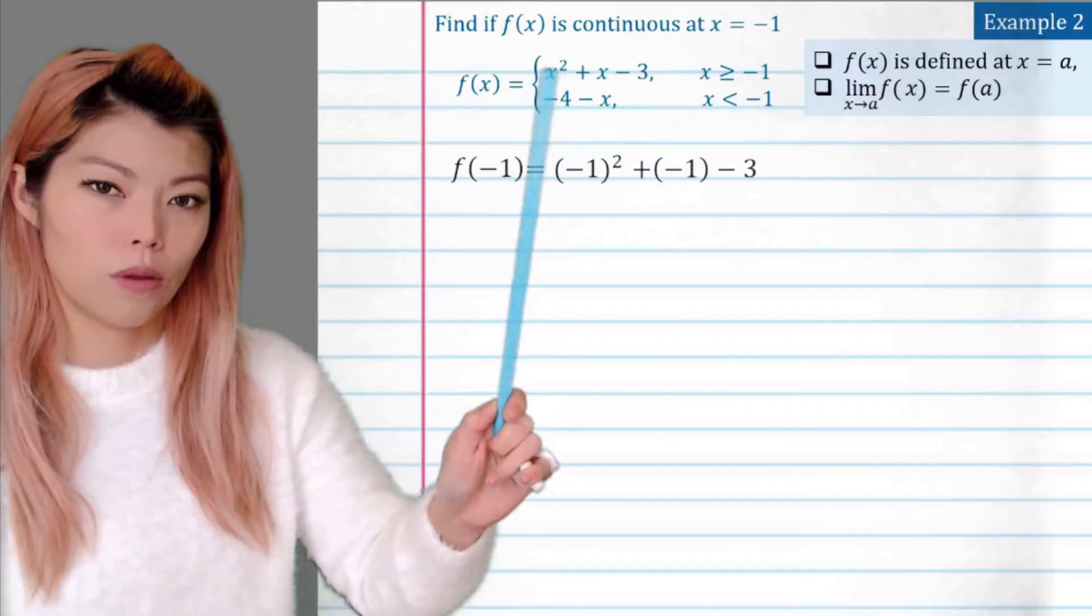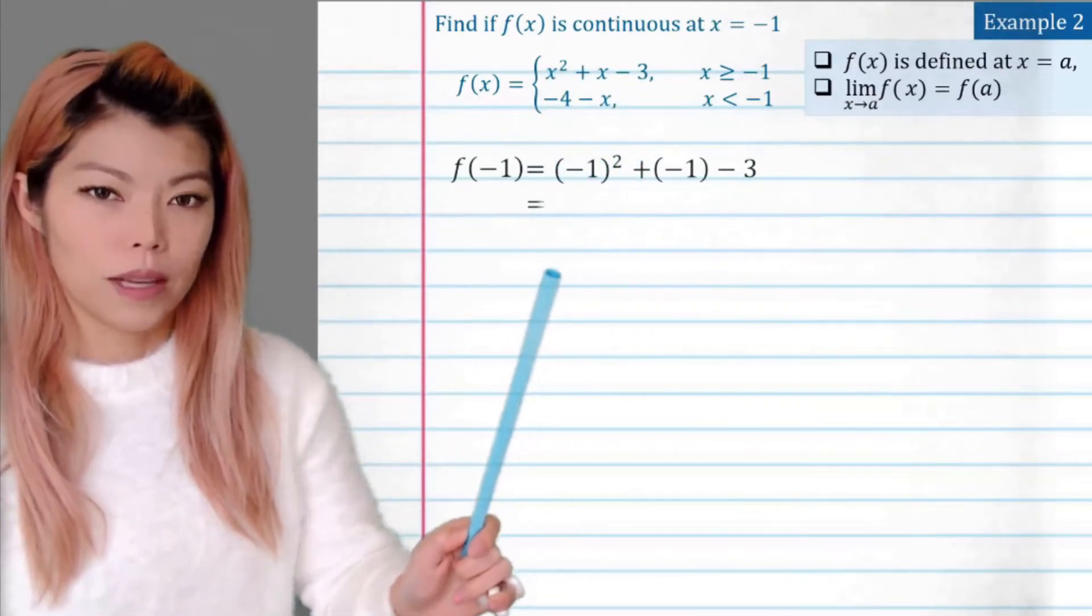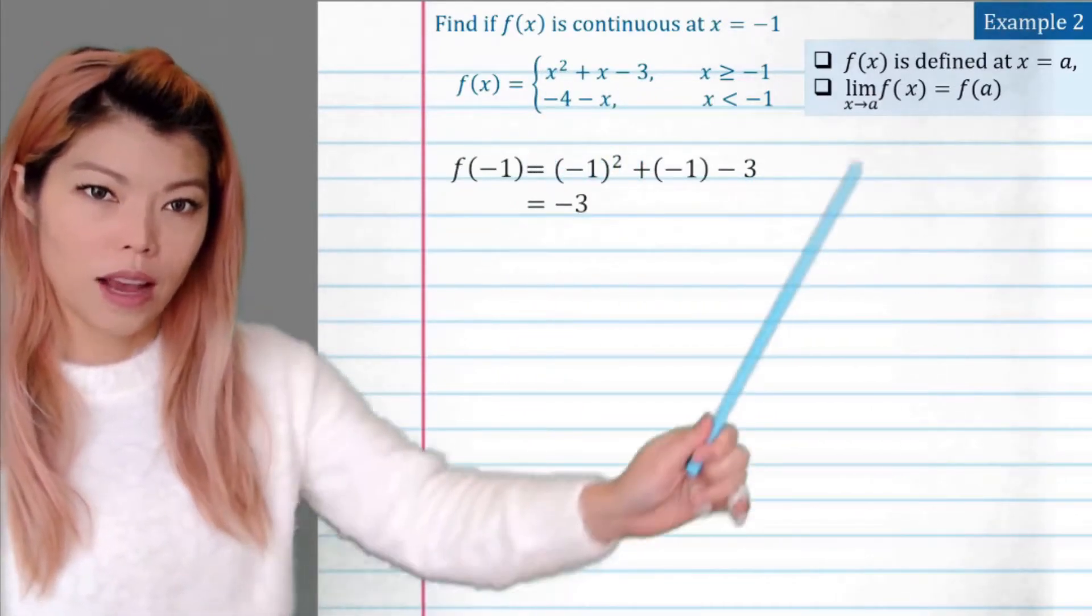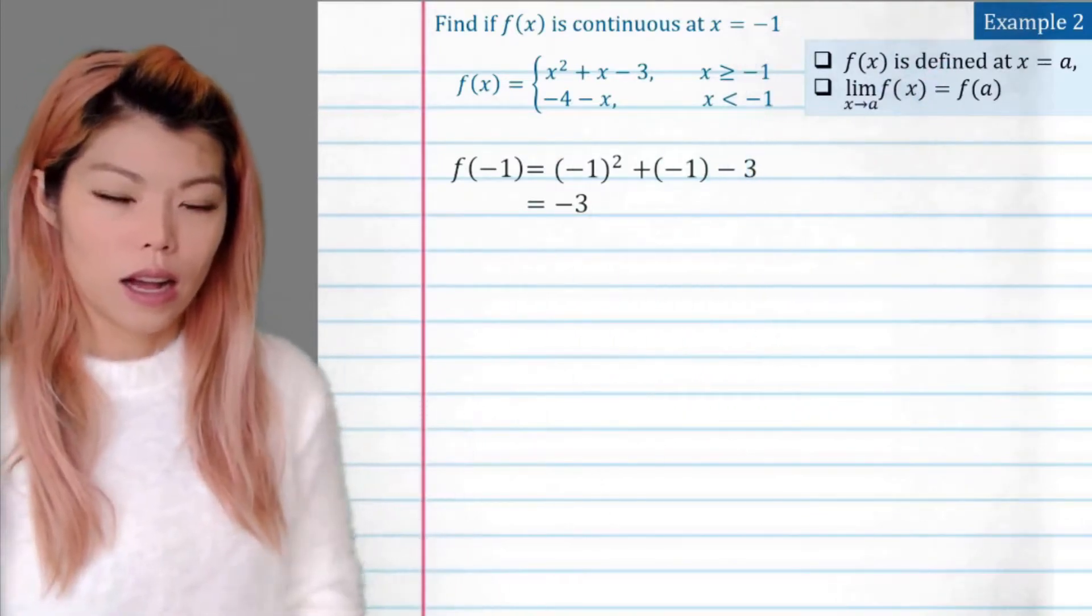So plug in negative 1 for all the x, and we obtain negative 3. So yes, the top thing is ticked off.